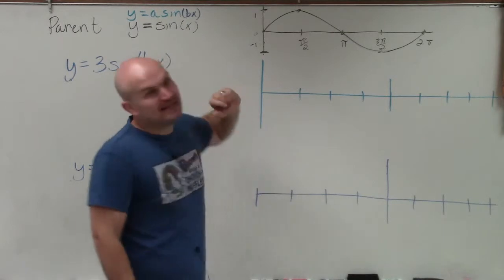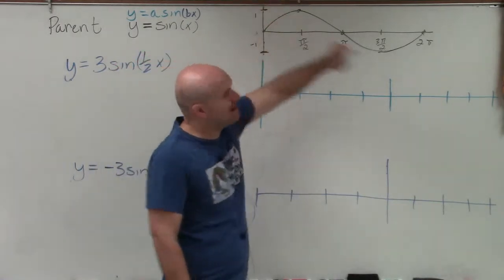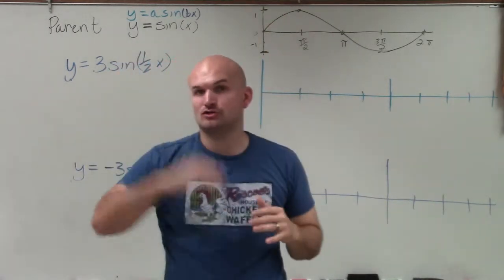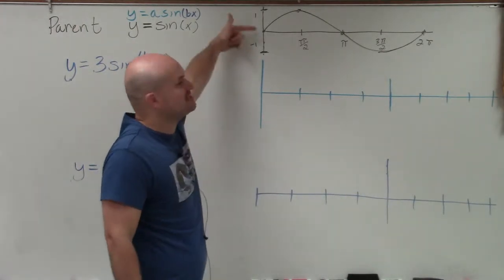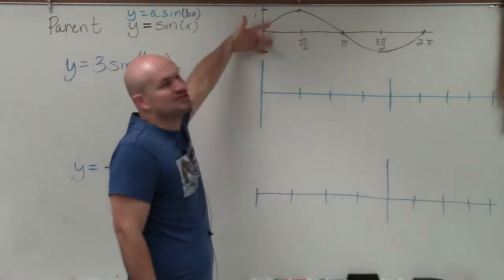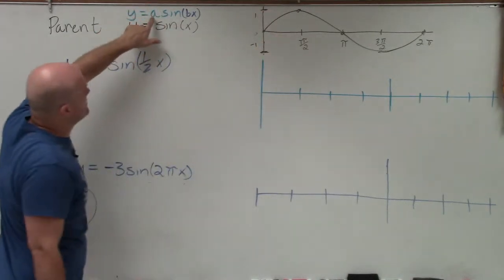You can see that the amplitude, again, is the half distance between our maximum and our minimum. So if there's no vertical translations, you can see that basically the amplitude is the distance from 0 to the max or the min, which in this case is 1, since that is going to be our a.